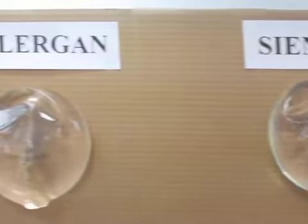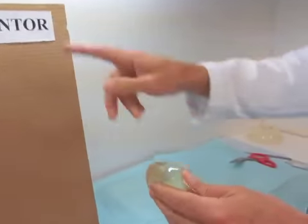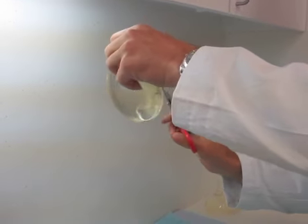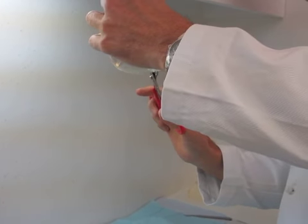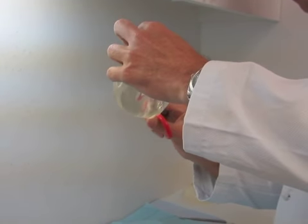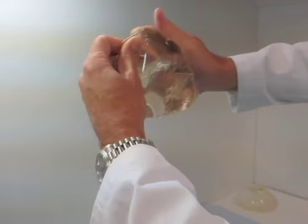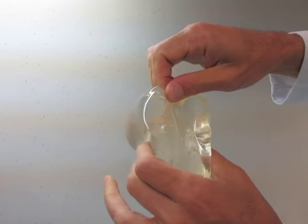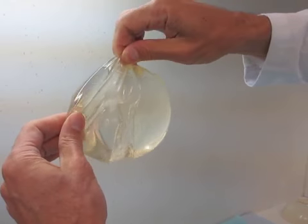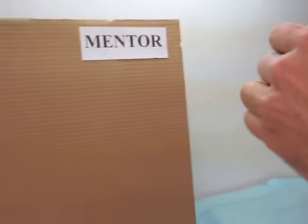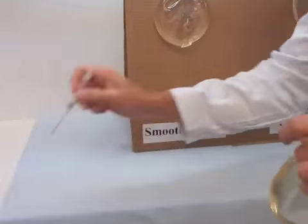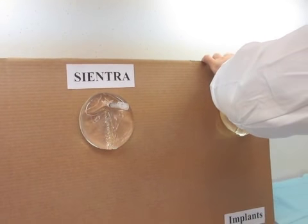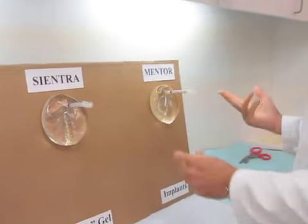And lastly, I'm going to take the Mentor Implant. We're going to do the same thing. Right down the middle. Open the shell up. You can see that's the gel itself. Also relatively cohesive. You'll see it doesn't drip out like water. And we're going to just pin this up here. So those are the three implants.